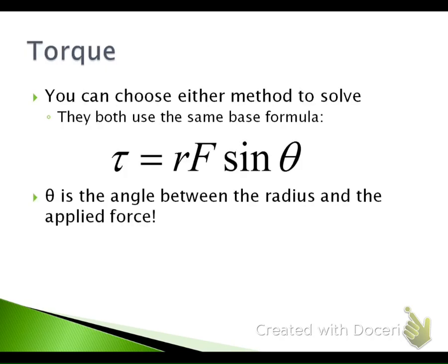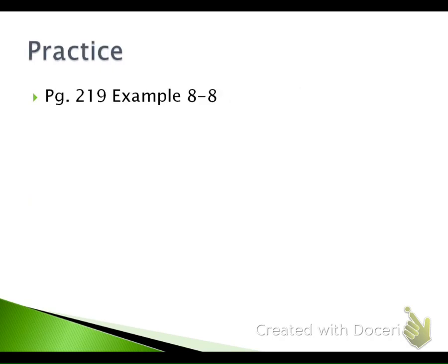Go ahead and turn to page 219. We're going to do the practice problem in your book — we'll walk through it together. It's about a bicep and the force it takes to move the elbow joint. It tells us we have an upward force of 700 newtons, and our radius is 5 centimeters, which we convert to 0.05 meters. In this first part, the elbow is at a complete 90-degree angle, so the radius and the force are perpendicular.